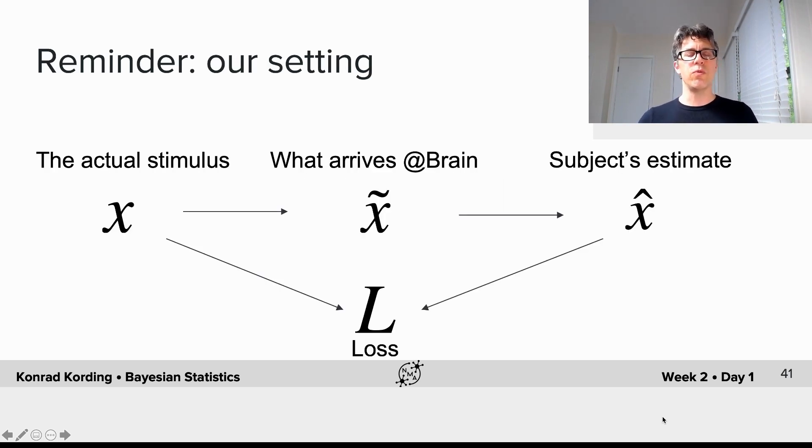Let's recapitulate the situation. We have an actual stimulus x, which we know because we designed the experiment. What arrives in the brain is tilde x, a variable we cannot know from the outside. Then we have the subject's estimate x hat.